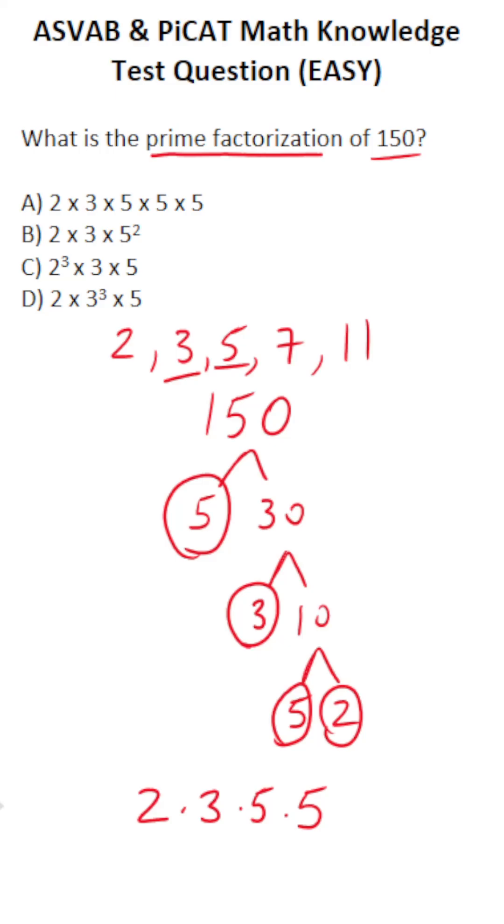If we multiply this out very quickly, what do we get? 2 times 3 is 6, 6 times 5 is 30, 30 times 5 is 150. We can see that this is not an answer choice because 5 times 5 is the same thing as 5 squared. So this is 2 times 3 times 5 squared. So our prime factorization is B, 2 times 3 times 5 squared.